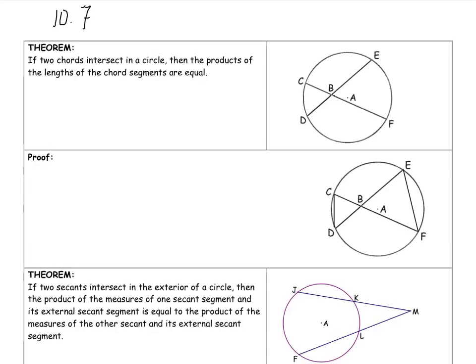We're going to be dealing with chords, secants, and tangents. Our first theorem says if two chords intersect a circle, then the products of the lengths of the chord segments are equal.